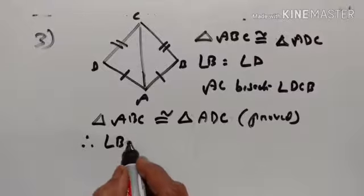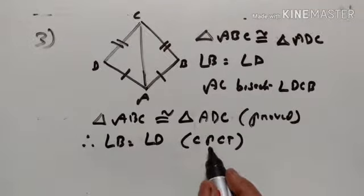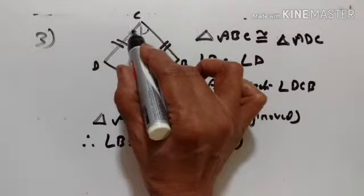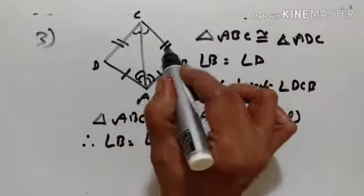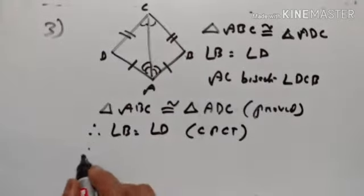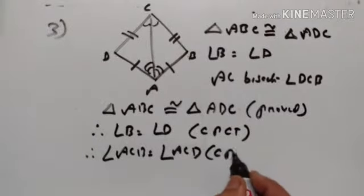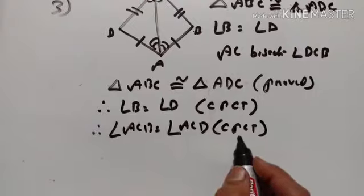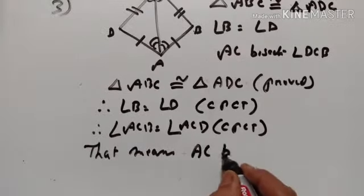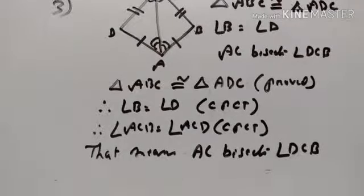Now we have proved that triangle ABC is congruent to triangle ADC. Therefore, angle B is equal to angle D by CPCT — corresponding parts of congruent triangles. Similarly, angle ACB is equal to angle ACD by CPCT. Therefore, AC bisects angle DCB, which means angle ACB is equal to angle ACD.